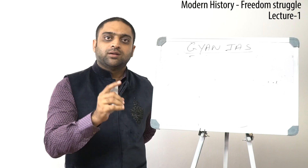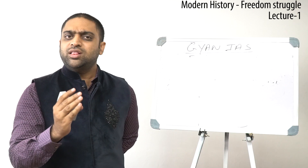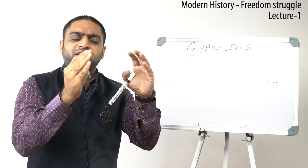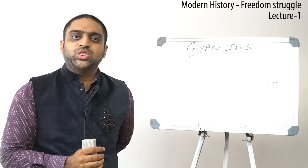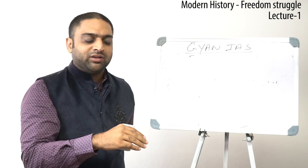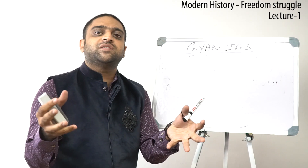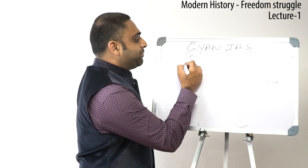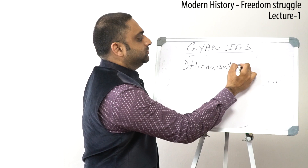The first process we can call Hinduization. All these rulers who came into India came from a very small cultural background. They interacted with the great religion Hinduism, which had thousands of years of history, and hence they accepted Hinduism as their religion and got assimilated into it. Scholars have said Hinduism is like an ocean — thousands of cultures have interacted with it and got assimilated into it. So one process happening was Hinduization.